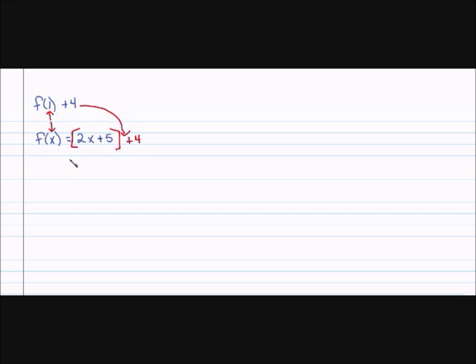So I'm going to rewrite my problem as 2, substituting with 1, plus 5, and then I have my plus 4. So 2 times 1 using order of operations is 2, plus 5, plus 4, and 2 plus 5 is 7, plus 4 is 11.